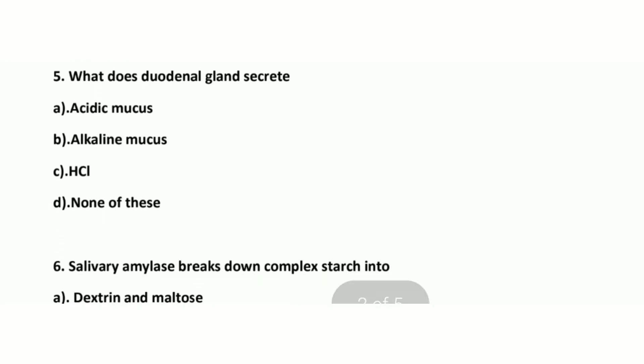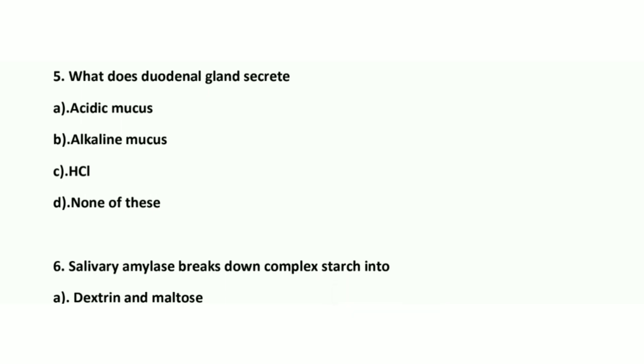Question number 5: What does the duodenal gland secrete? The duodenal gland secretes alkaline mucus. The right option is correct.